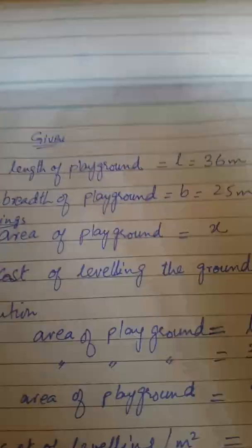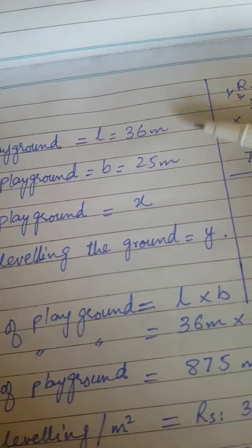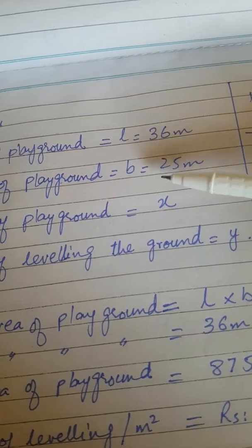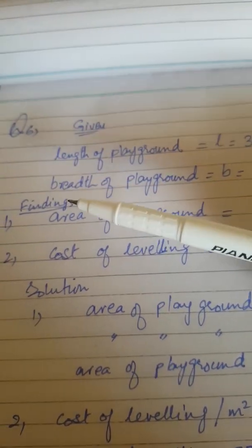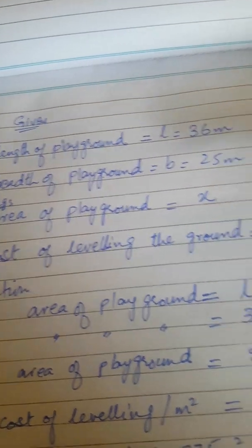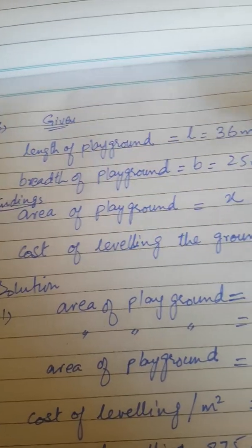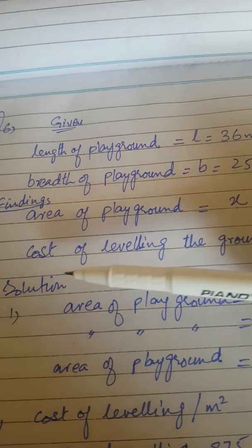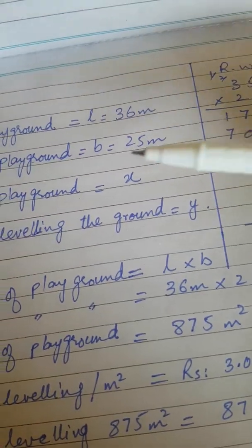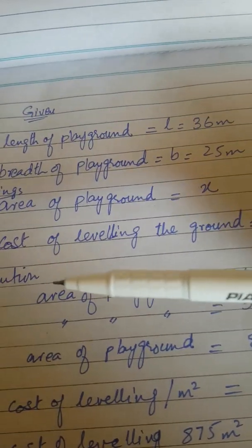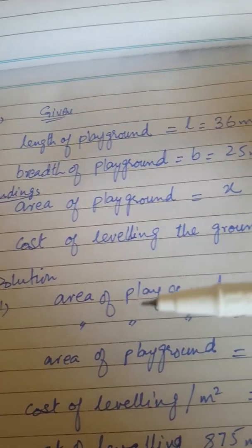The length of the playground is 36 meters, the breadth of the playground is 25 meters. We need to find the area of the playground, which is unknown — represented by X — and the cost of leveling the ground, represented by Y. Both are the findings.